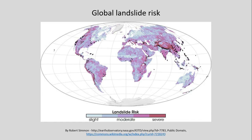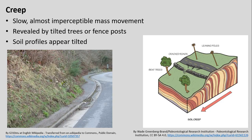When looking at this at a global scale, we can fairly intuitively predict that where we generally see higher slopes is where we also see greater landslide risks. For example, the Himalayan Mountains, the Rocky Mountains, the Andes Mountains — where we have these very high gradient places, those are generally where we see some of the greatest areas of risk for things like landslides.